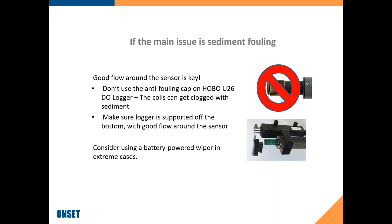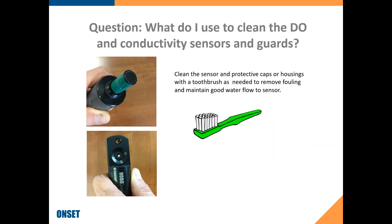In extreme cases of silt fouling, there are battery-powered wipers available — they're not cheap, but some users do use them. It's basically a fancy electric toothbrush for your data loggers that brushes the silt or biofouling off the face of your sensor. Even with these anti-fouling accessories, you'll still want to do some cleaning of the sensor faces. The sensor face for the DO logger and the conductivity loggers should be cleaned with a toothbrush — they're durable sensors and don't mind it.